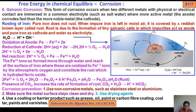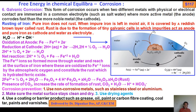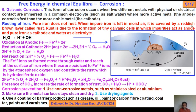Pure iron does not rust. When impure iron is left in moist air, it is covered by a reddish-brown layer called rust. Rust is due to the formation of tiny galvanic cells in which impurity acts as the anode, pure iron acts as the cathode, and water as the electrolyte. Look at this picture — this is the water, this is iron, this is the anodic side, this is the cathodic side, this is the atmosphere. The formula of rust is Fe2O3·xH2O.